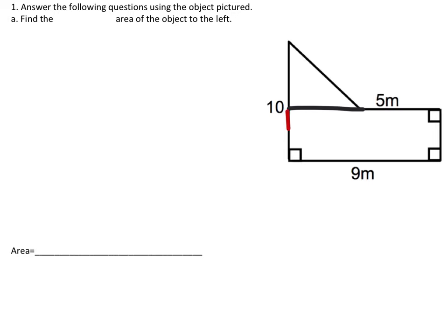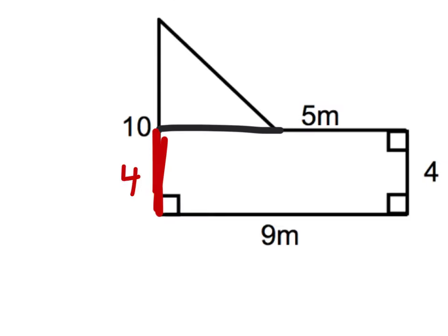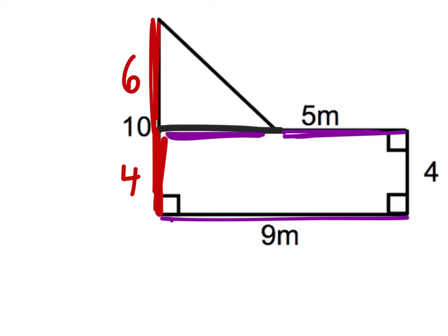But we have these other sides. Now the full length here was 10, but we only want part of that 10. If we look closer, we see that this side length is 4, so the rest of this length would be a 6. Likewise, if this length is 5 and the whole thing is 9, then this length right here would be 4.